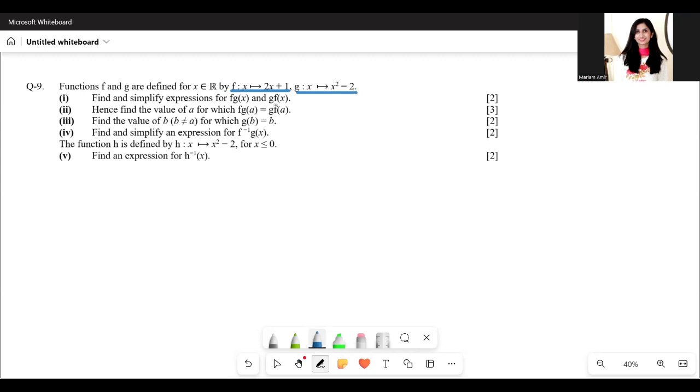Find and simplify the expression f(g(x)) and g(f(x)). So f(g(x)) means that in f we have to substitute the function g(x), which would give us 2 times (x squared minus 2) plus 1. That gives 2x squared minus 4 plus 1, so 2x squared minus 3.